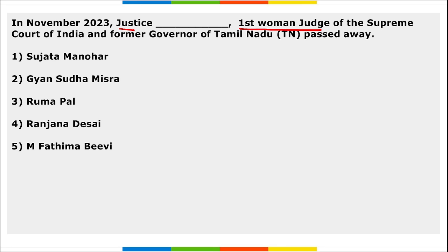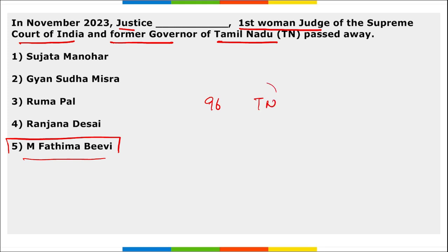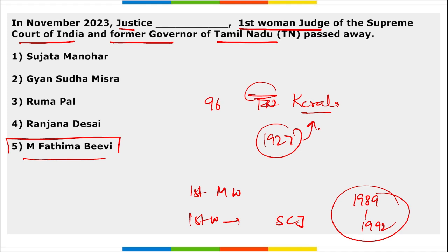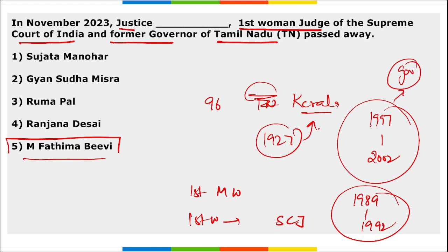Next: Justice M. Fathima Beevi, the first woman judge of the Supreme Court of India and former governor of Tamil Nadu, passed away. She passed away at the age of 96 in Kerala. Born in 1927 in Kerala, she became the first Muslim woman judge appointed at any higher judiciary, and the first woman to become a Supreme Court justice in an Asian country. She was a Supreme Court judge from 1989 to 1992, and served as governor of Tamil Nadu from 1997 to 2002.